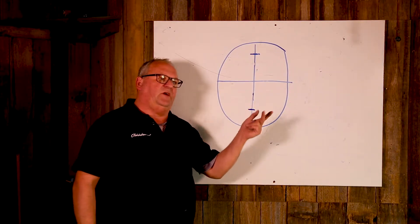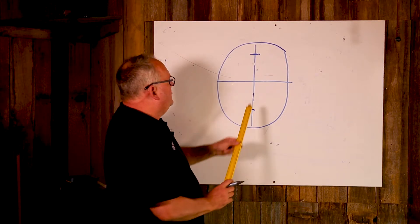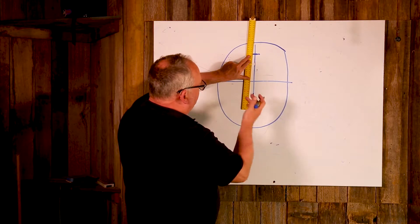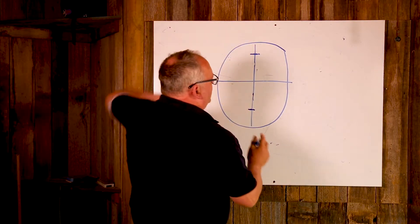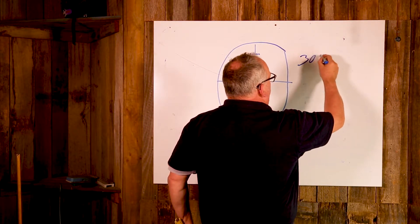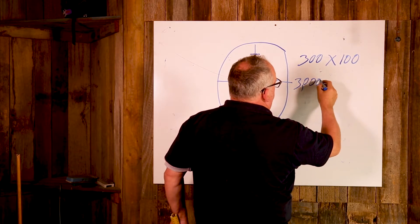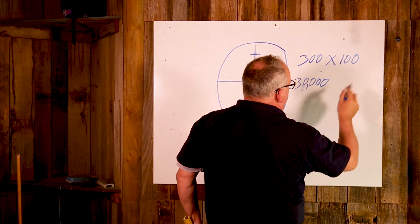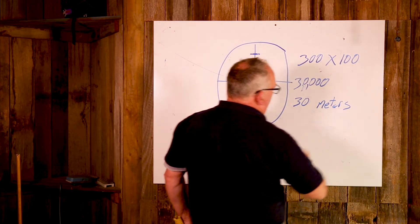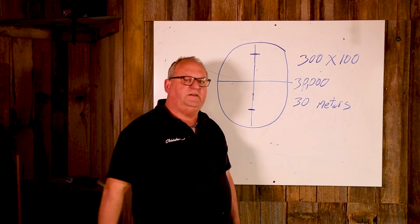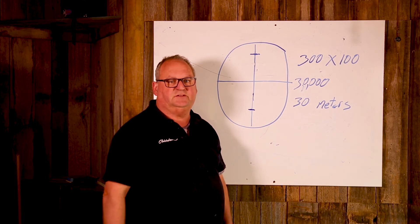I get my apprentice to hold the staff wherever I want to measure, away from the dumpy level. Looking at the staff — this is a ruler I know, but if it were the staff — and I've got 300 mils between the two stadia lines, it's simply 300 times 100, which is 30,000, meaning it is 30 meters away from the dumpy level to the staff. If there's 300 mils between the stadia lines, it means it's 30 meters between the two. It's that simple.